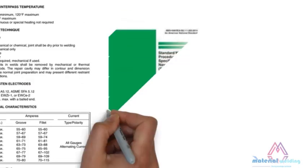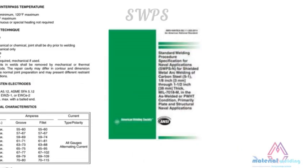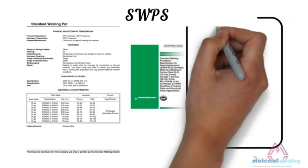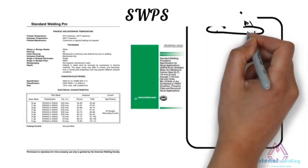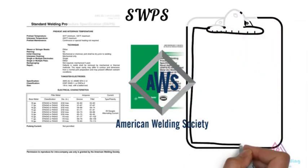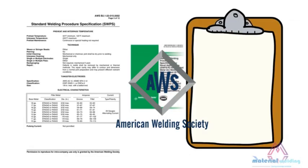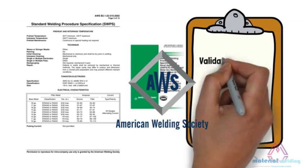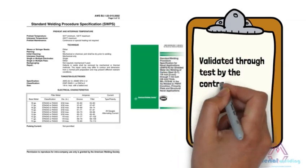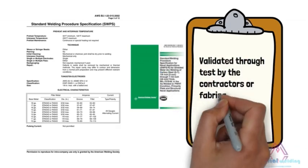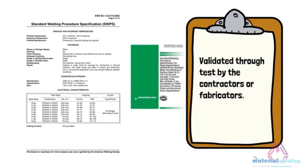At number three is Standard Welding Procedure Specification, or SWPS. They are published by the American Welding Society and can be purchased by any company for their use. They are validated through tests by the contractors or fabricators.